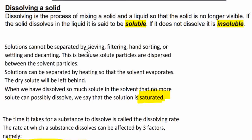Solutions cannot be separated by sieving, filtering, hand sorting, or settling and decanting, because solute particles are dispersed between the solvent — for example, sugar dissolved in tea cannot be separated by those methods. However, sugar from tea can be separated by heating so that the solvent evaporates. We evaporate the tea liquid, and the dry solute — the sugar crystals — will be left behind.